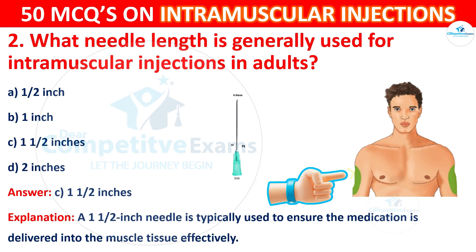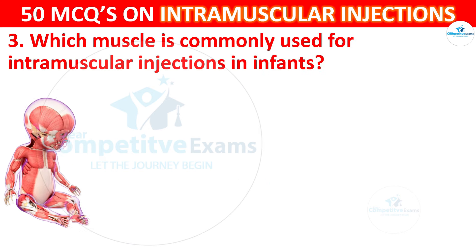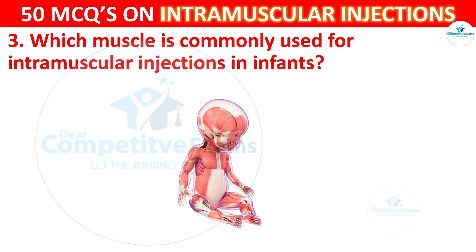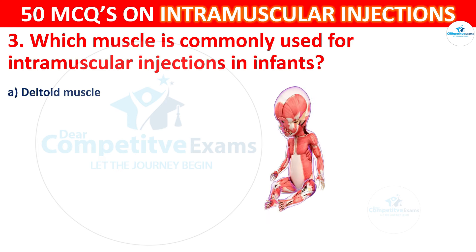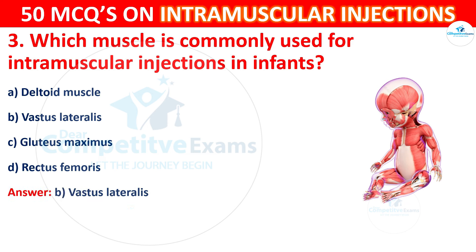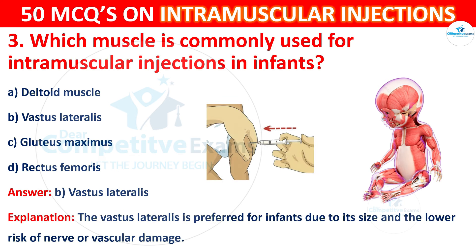Question 3: Which muscle is commonly used for intramuscular injection in infants? Options are: deltoid muscle, vastus lateralis, gluteus maximus, or rectus femoris. The correct answer is B, vastus lateralis. The vastus lateralis is preferred for infants due to its size and the lower risk of nerve or vascular damage.